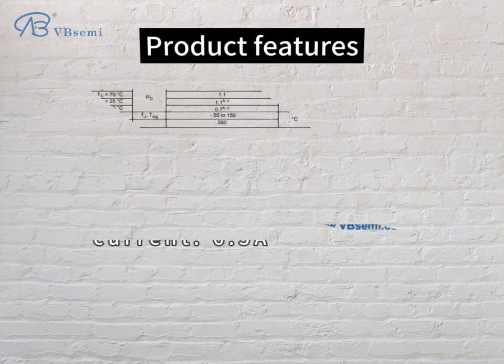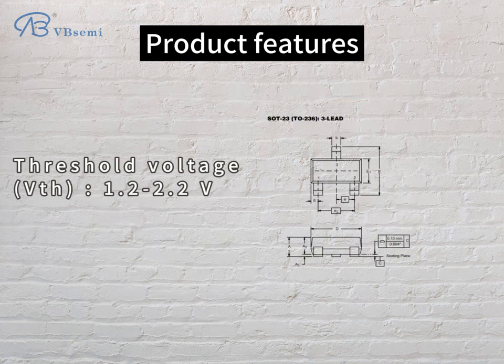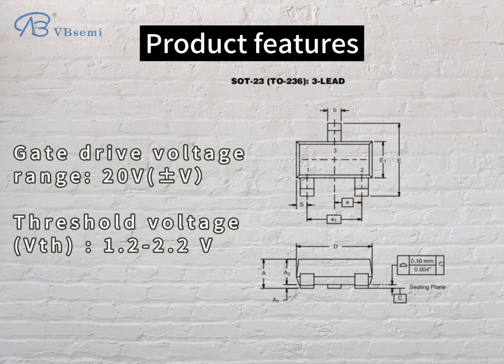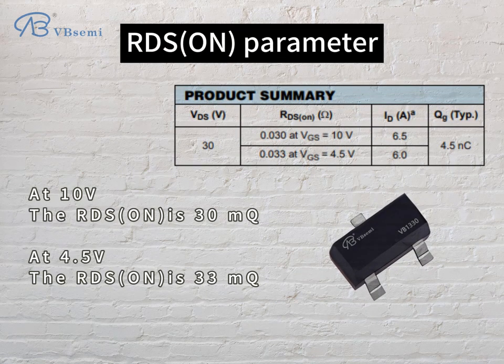Product features: rated voltage 30V, max continuous current 6.5A, gate drive voltage range 20V, threshold voltage VTH 1.2–2.2V.